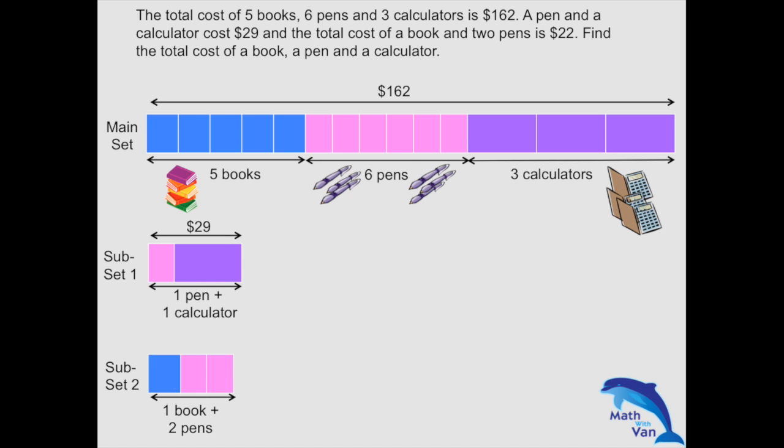We apply the same principle behind the simultaneous equation method: make the quantity of one unknown the same. I'll start by making the quantity of calculators the same. Try on your own what happens when you make books or pens the same. For now, I'll show the calculator approach.